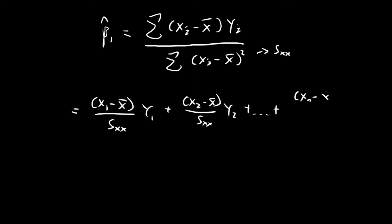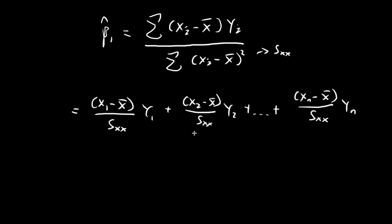And continuing to xn minus the sample mean of x, times some constant times yn. An expression with such a structure is what we call a linear combination of y. You have constants times the y terms, and then you're adding them up together. This is what we call a linear combination of the y terms.